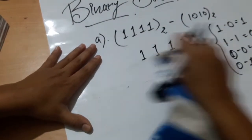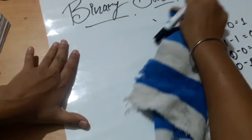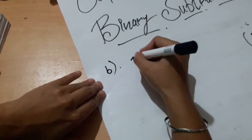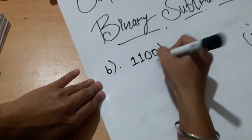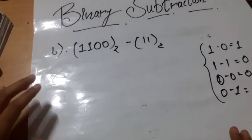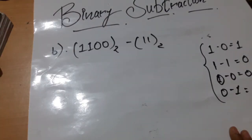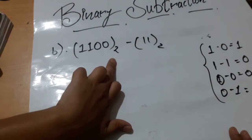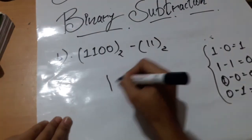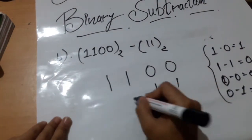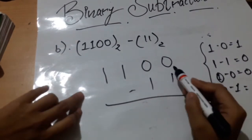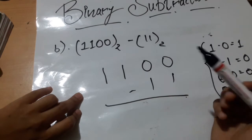That was a pretty easy question. Now we will try to solve a more difficult one. We will take 1100 to the base 2 minus 11 to the base 2. First we will arrange these numbers properly and then start solving the subtraction.